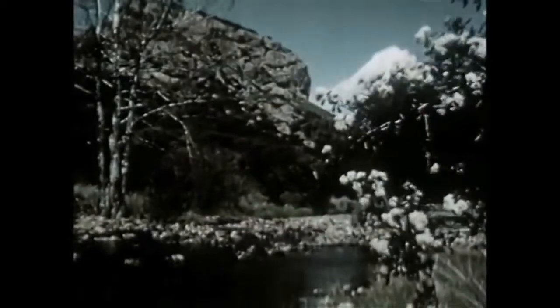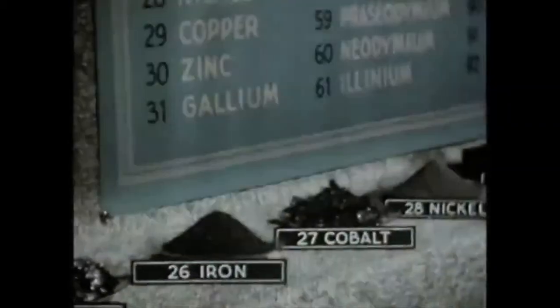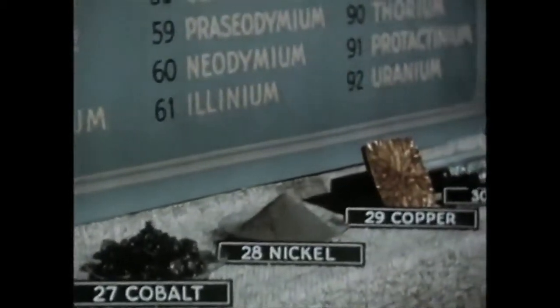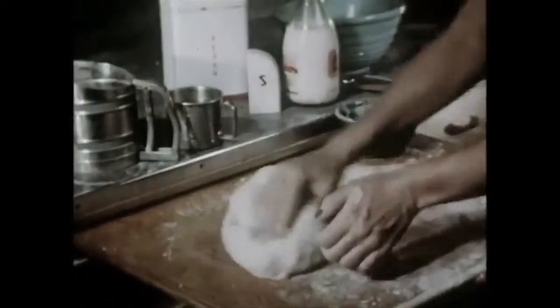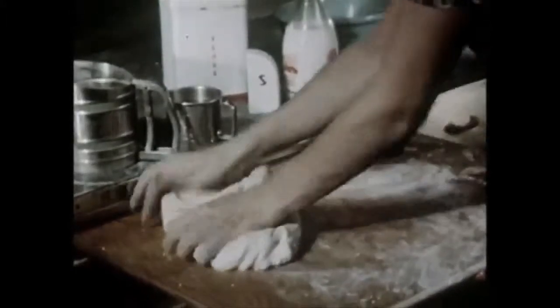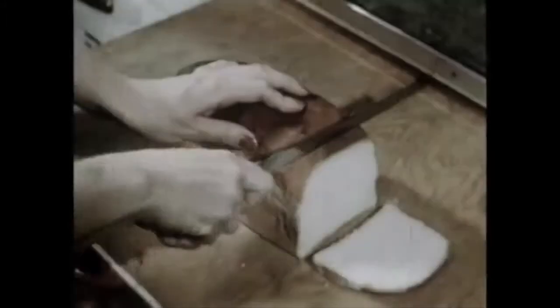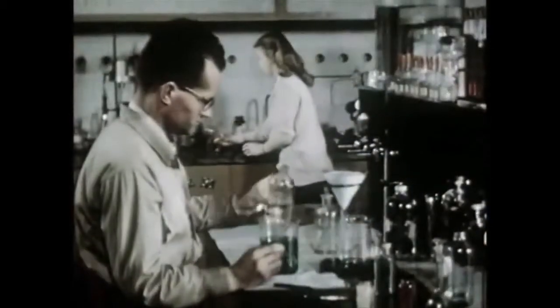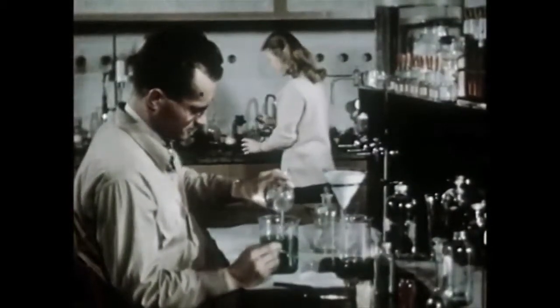There are many different substances, each a combination of some of the 92 known chemical elements. Just as yeast, flour, salt, sugar and shortening are the ingredients used in making bread, so are the 92 elements the ingredients of all matter.